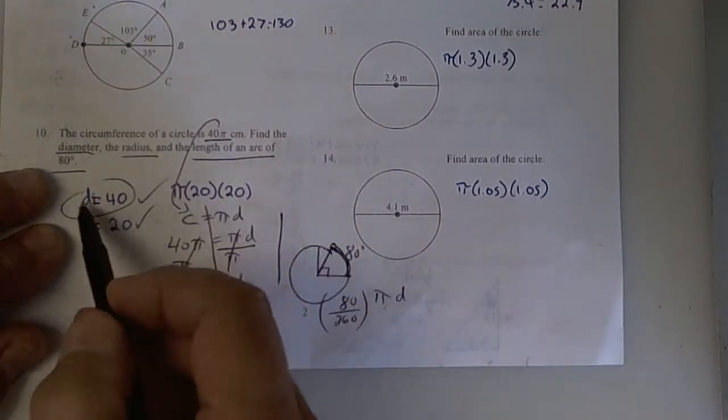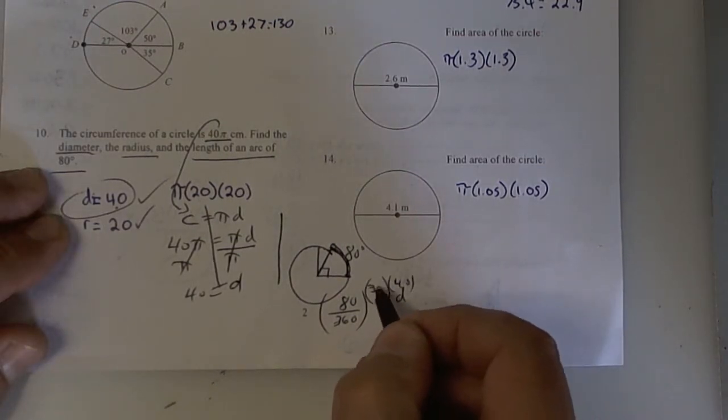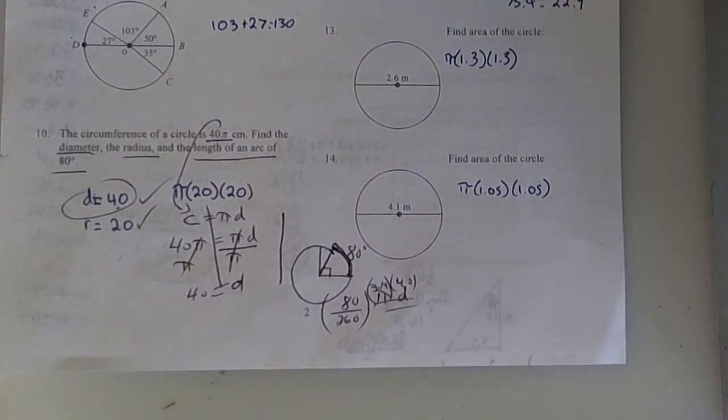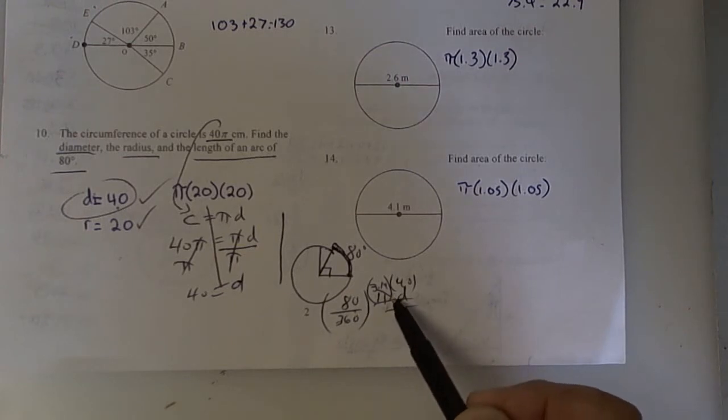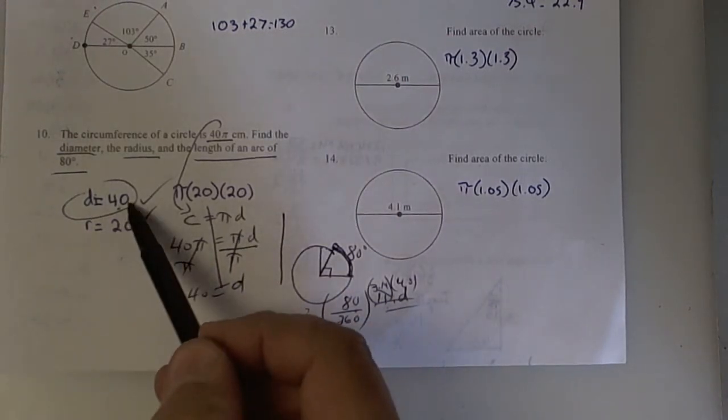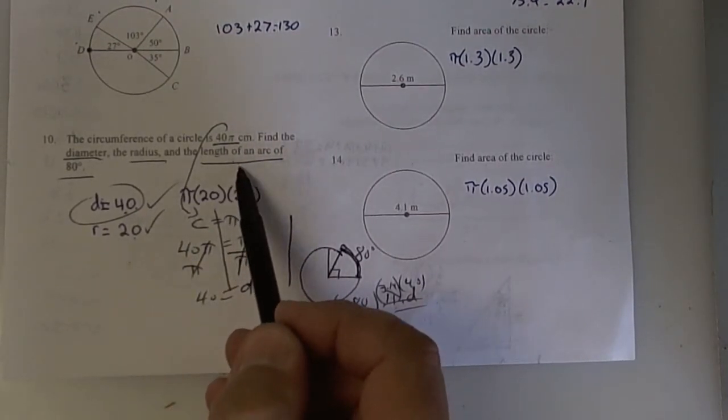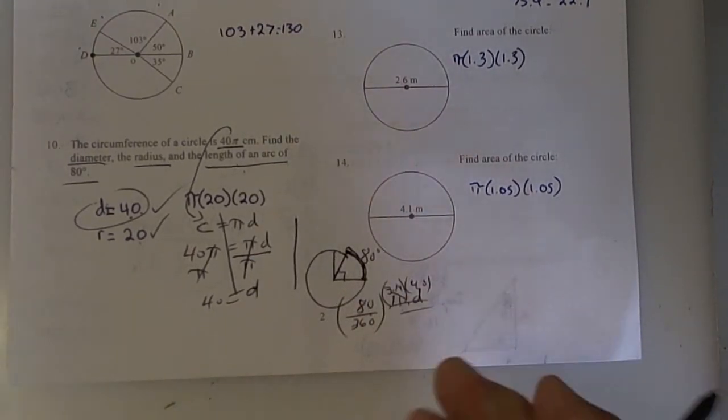So the diameter you have right is 40, and you've got to multiply by 3.14. So the fact, what I'm trying to tell you is, you should have multiplied a fraction of the whole circumference. And you don't have that. Yes, you did find the diameter. Yes, you did find the radius. But you did not find the most important piece, which is the actual length of that 80 degree arc.